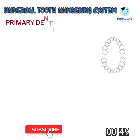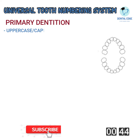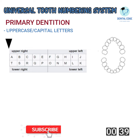For primary dentition, we use uppercase or capital alphabets for each primary tooth. Starting from the maxillary right second molar, we use the letters A through J. Then for mandibular teeth, starting from the mandibular left molar, letters K through T are used.